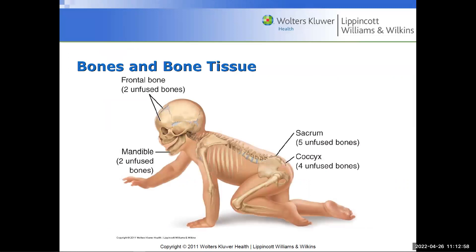When we look at bones and bone tissue in particular, when we look at an infant, they have unfused bones — the fontanelles, the mandible, and so on. Why does an infant have unfused bones? One word, begins with G, six letters: growth. Because what would happen if the skull didn't have these spaces as the brain grew?